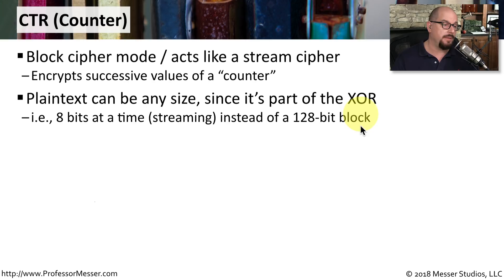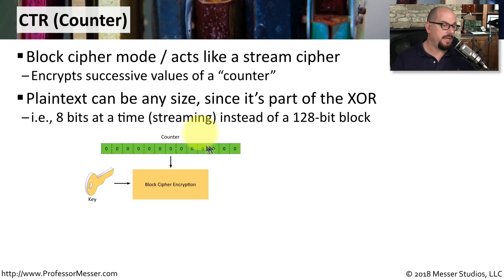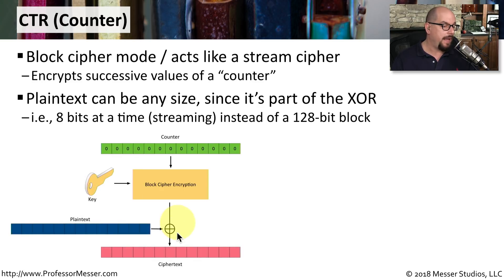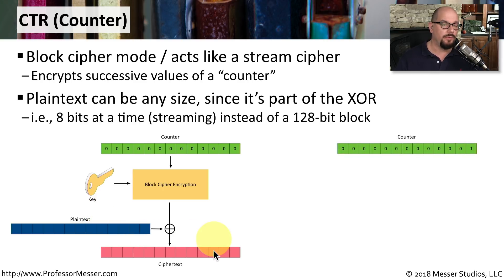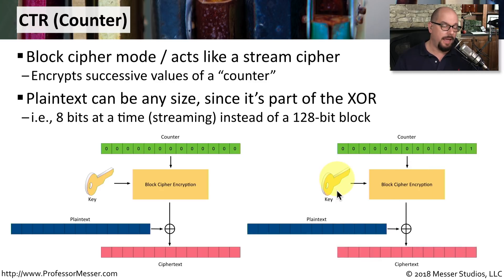Instead of using a 128-bit block, for example, we could encrypt eight bits at a time. This starts with a counter, which can begin at zero or any number you'd like. We encrypt the counter using our key in counter mode, then XOR the result with our plain text block to create the cipher text. For the next block, we increase the counter by one, encrypt it with our key, and XOR those results with the next plain text block to get the final cipher text. For subsequent blocks, we continue to increment the counter, which also provides the randomization needed if any plain text blocks happen to be identical.